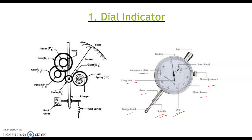Internally, the dial gauge has a plunger with reciprocating motion, and a rack and pinion arrangement that converts the reciprocating motion of the plunger into rotary motion of the needle. For further magnification, a compound gear train is used — a number of gears are arranged so that a small movement of the plunger is shown as a large deflection of the pointer.